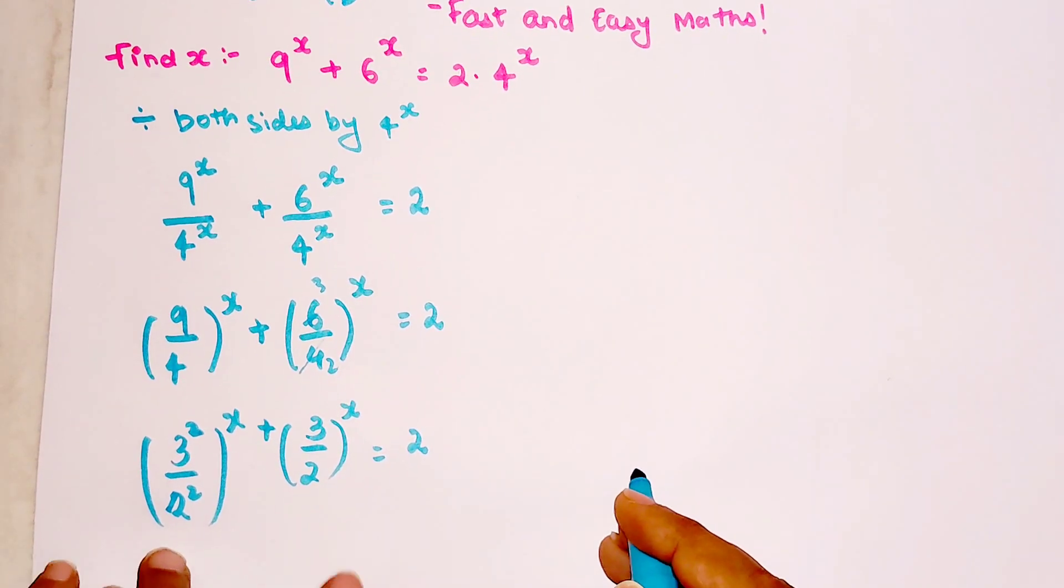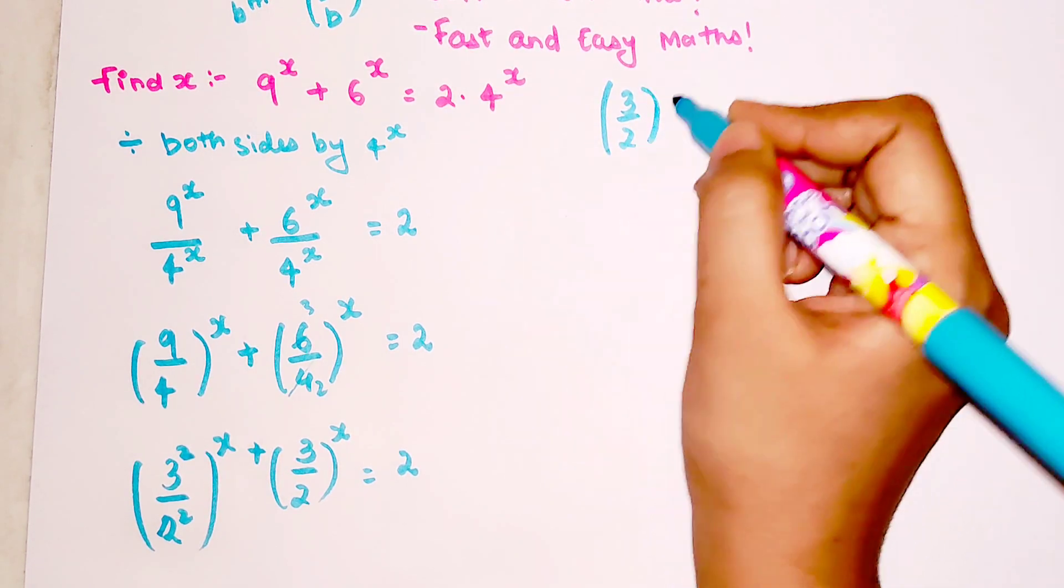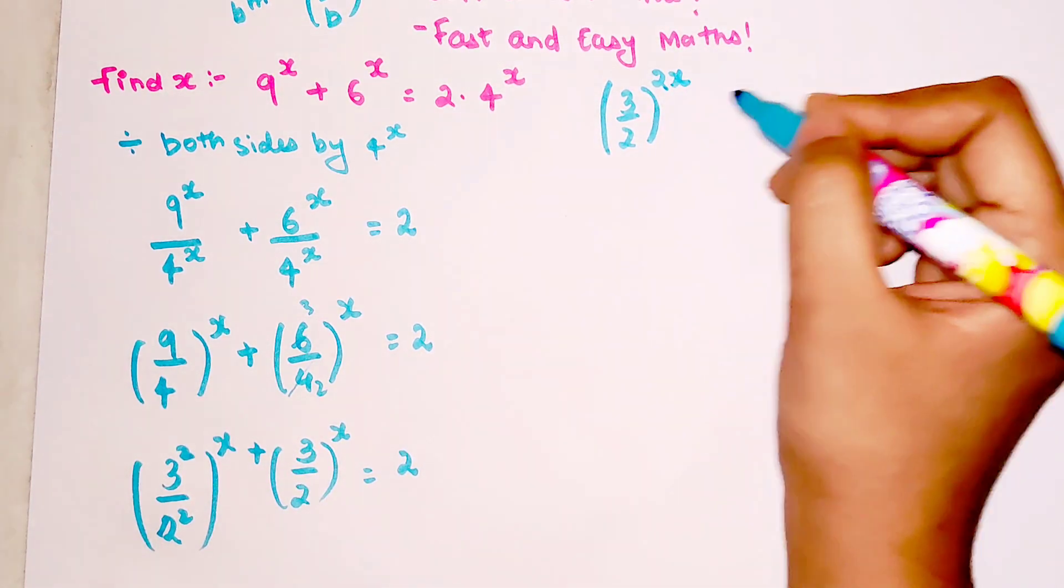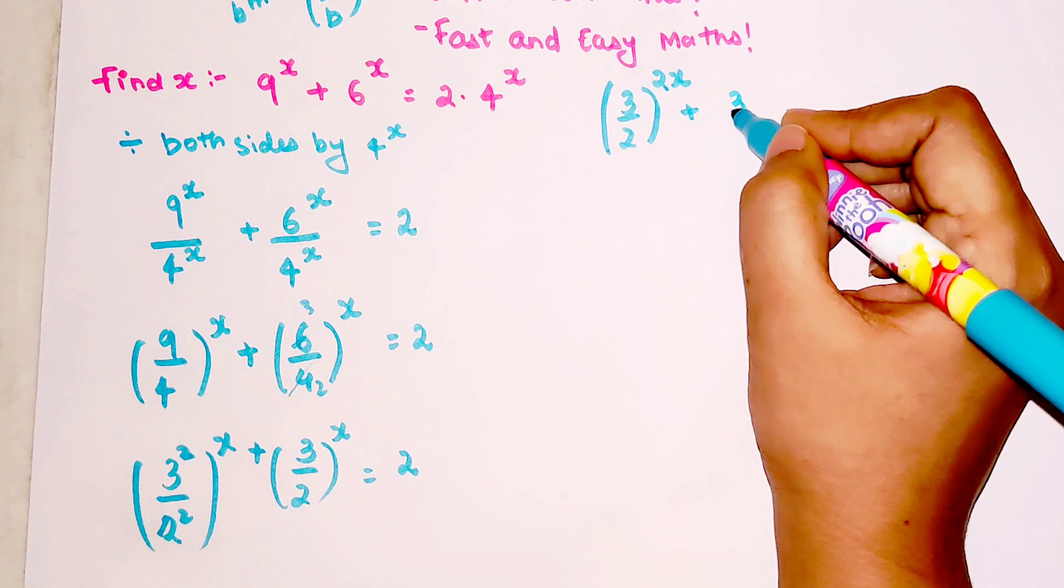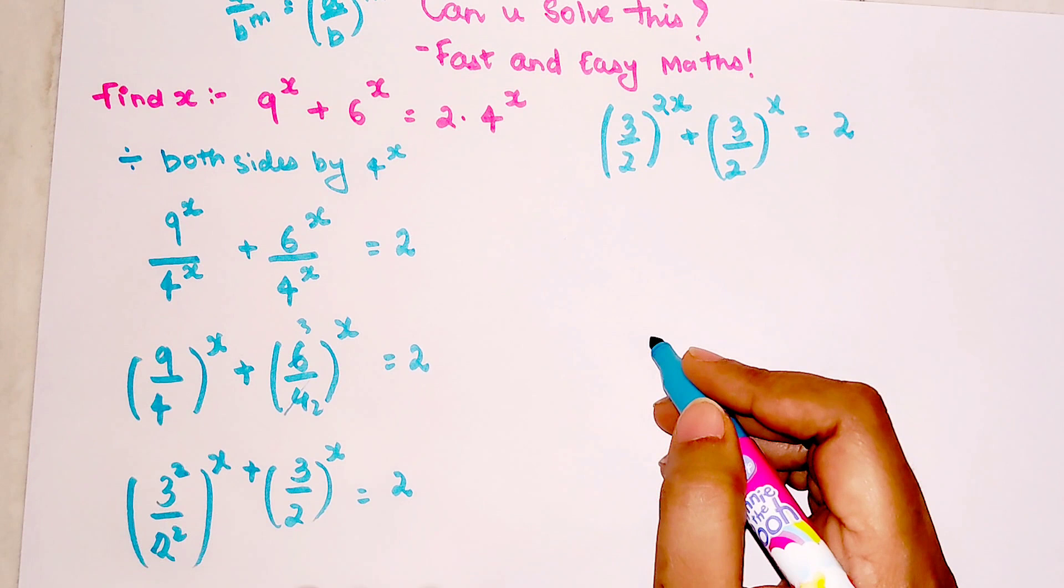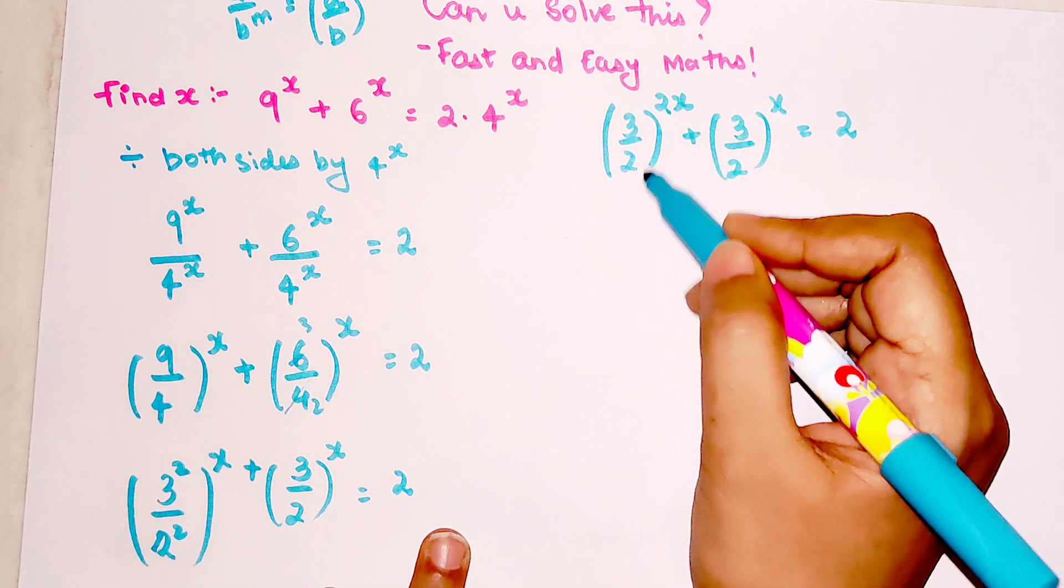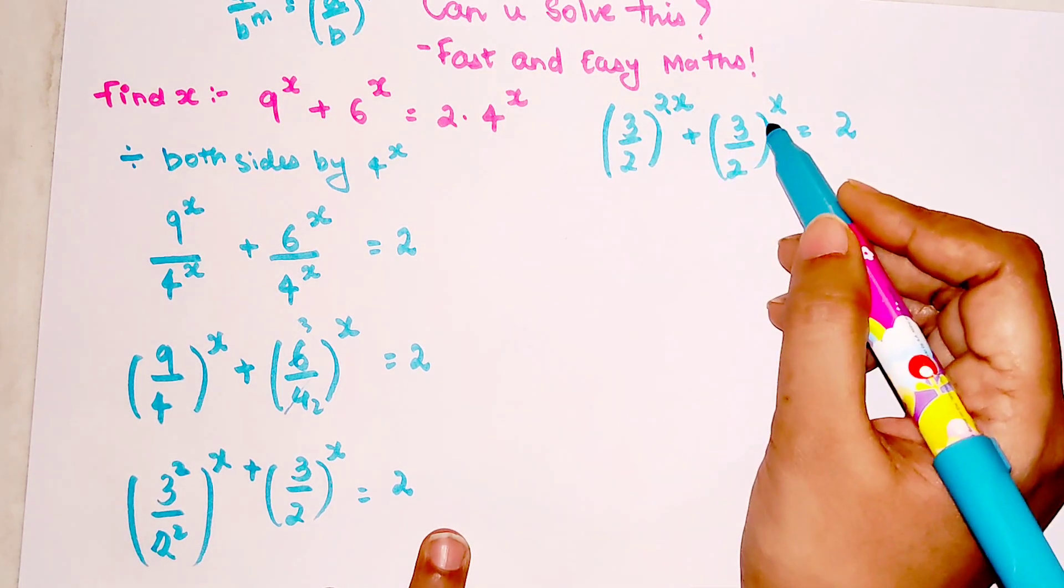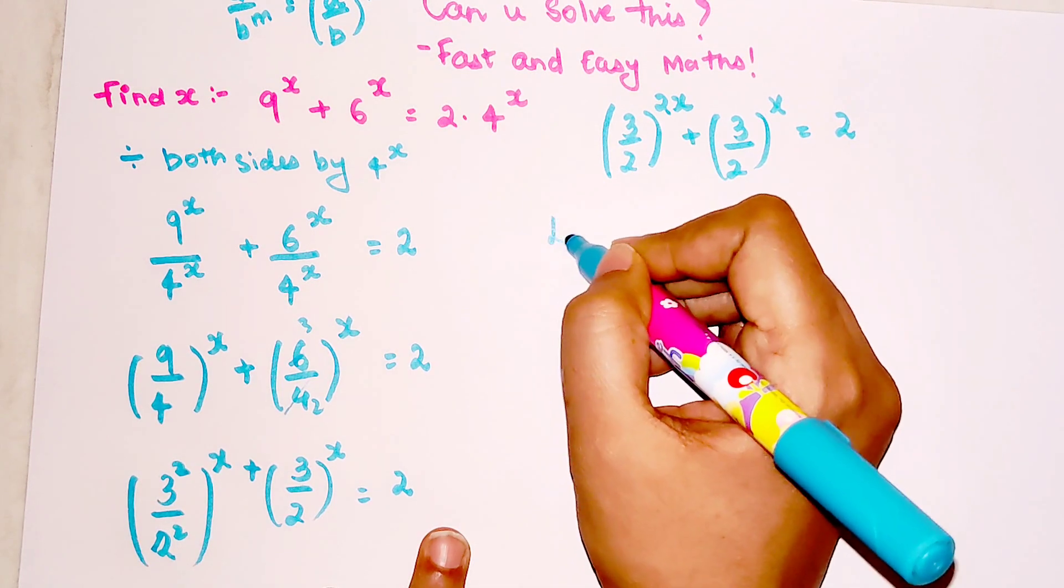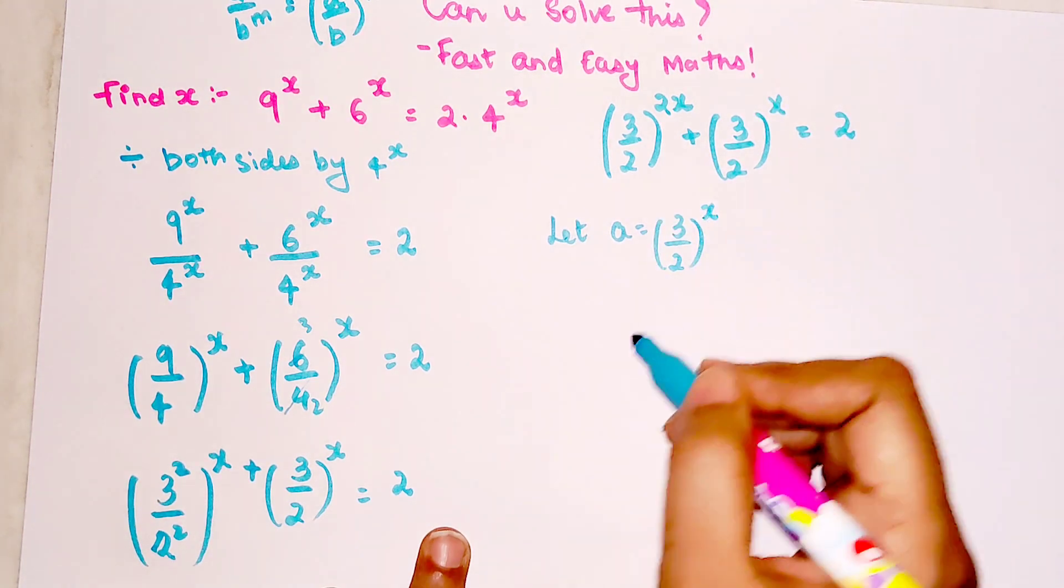So now this can be written as (3/2)^2x + (3/2)^x = 2. Now see, there is one power which is increased by 2 and here there is a single power, so this can look very much similar to a quadratic. We will do let a = (3/2)^x, so the equation changes to a^2 + a = 2.